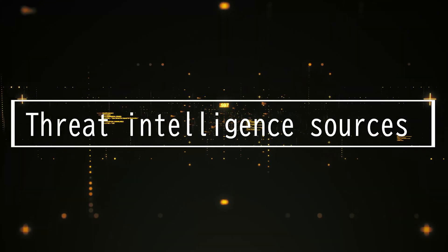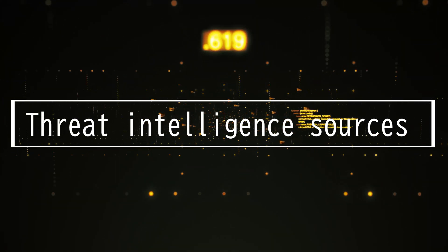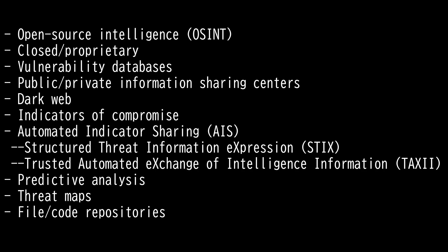This video is on threat intelligence sources. There are 10 different sources you should memorize for the Security+ 601 exam. First, we have OSINT, or open source intelligence — it refers to intelligence data gathered from open or public sources.